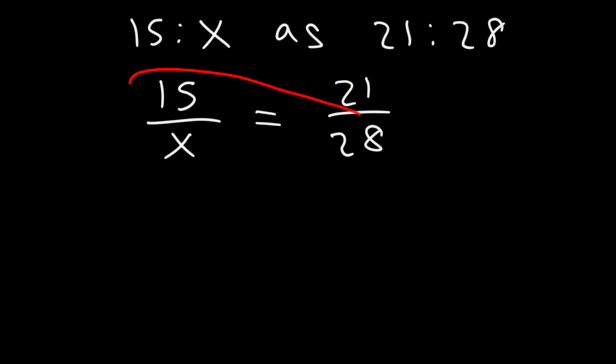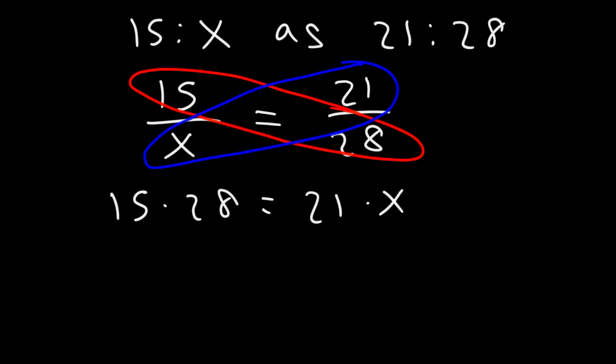So that means that 15 times 28 must equal 21 times x. So now that we have the equation, we can calculate the value of x.